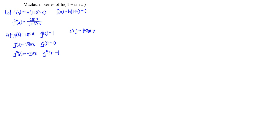Then we proceed to the h(x) function. At the point x equal to 0, we have 1 + sin(0), which means 1 + 0 is 1. Then differentiating: differentiate sin gives cos, so cos(0) is equal to 1. Then differentiating again gives negative sin, which is 0.